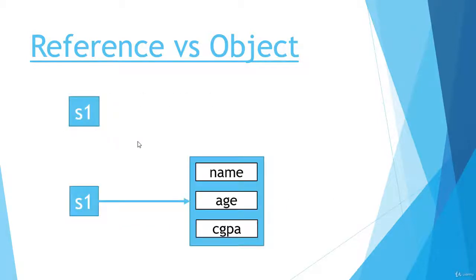You can see it in a graphical view: when we create only a reference, then s1 is just a reference, not an object. In the figure below, you can see that the s1 reference is pointing to the object that has some instance variables like name, age, and cgpa. So this is the difference — a reference variable points to nothing until we create an object, at which point the reference points to that object, as shown with s1 pointing to the object of class Student.